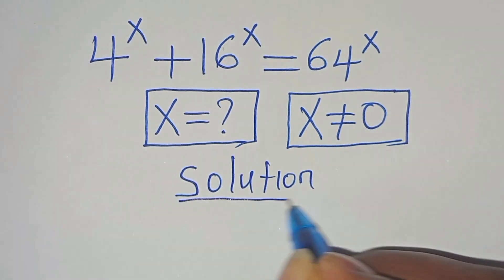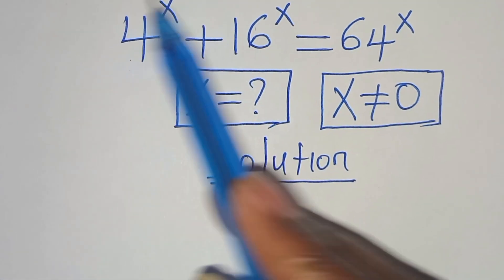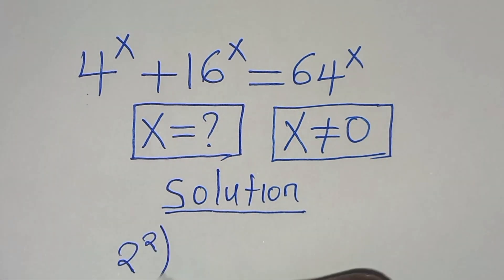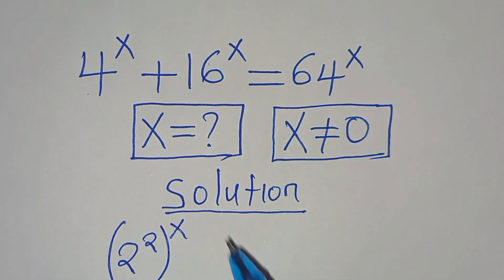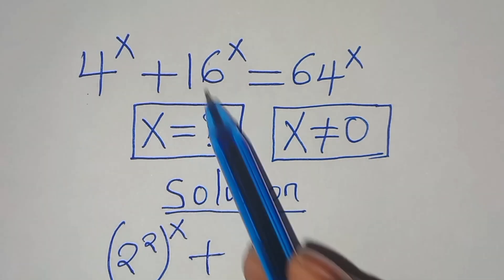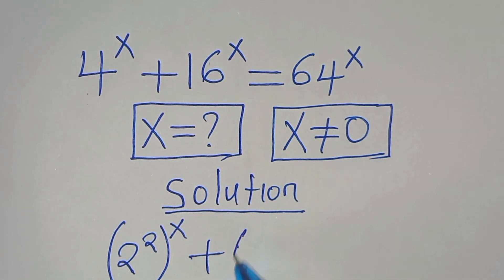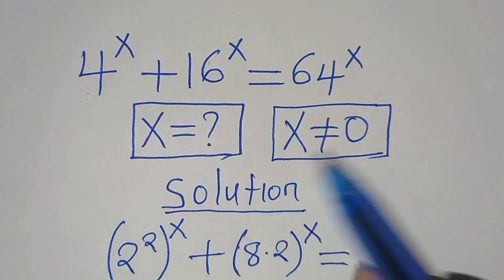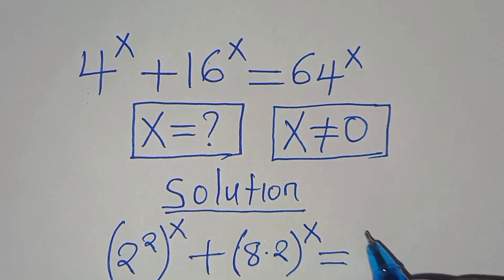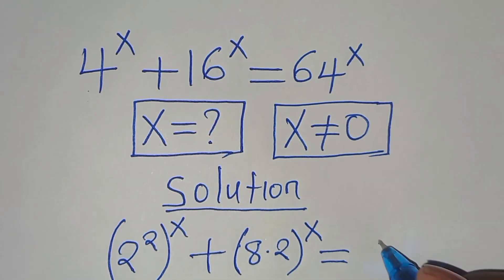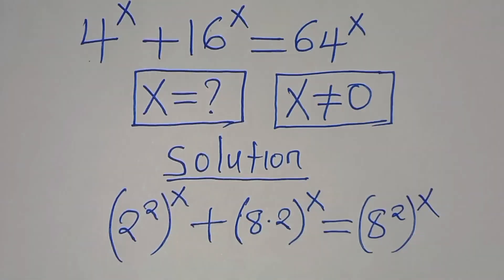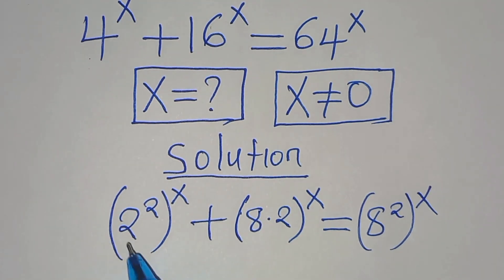The first thing to do is express 4 to the power of x as 2 to the power of 2, then raised to the power of x. Then 16 to the power of x we express as 8 multiplied by 2, raised to the power of x. This equals 64, which we can express as 8 to the power of 2, raised to the power of x.